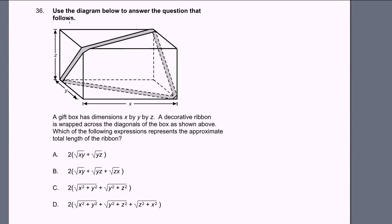Problem 36. Use the diagram below to answer the question that follows. There's the diagram. A gift box has dimensions x by y by z. A decorative ribbon is wrapped across the diagonals of the box as shown above. Which of the following expressions represents the approximate total length of the ribbon? So let's just measure this ribbon.